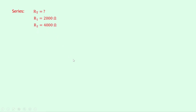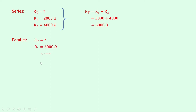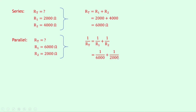Doing the series combination first, we have RT is what we're trying to find. R1 is 2,000 ohms and R2 is 4,000 ohms, just changing the kilo ohms into ohms by multiplying by 1,000. So RT equals R1 plus R2, which equals 2,000 plus 4,000, giving an answer of 6,000 ohms. Then for the parallel combination, RT is what we're trying to find, R1 is 6,000 ohms and R2 is 2,000 ohms. So 1 over RT equals 1 over R1 plus 1 over R2. Substituting in the numbers gives 1 over 6,000 plus 1 over 2,000. The lowest common denominator is 6,000, so we get 1 over 6,000 plus 3 over 6,000, which gives 4 over 6,000. Flipping both sides gives RT equals 6,000 over 4, which equals 1,500 ohms.